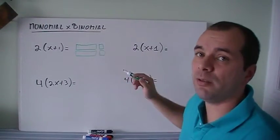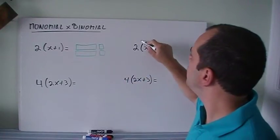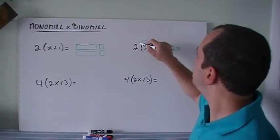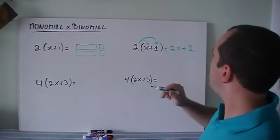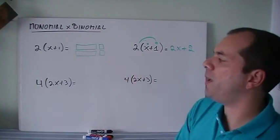How do we do this in algebra? Well, you're probably used to drawing little arrows, and that's a good idea. 2 times x gives me 2x, and 2 times 1 gives me plus 2. So we get the same result, 2x plus 2, and it will match.